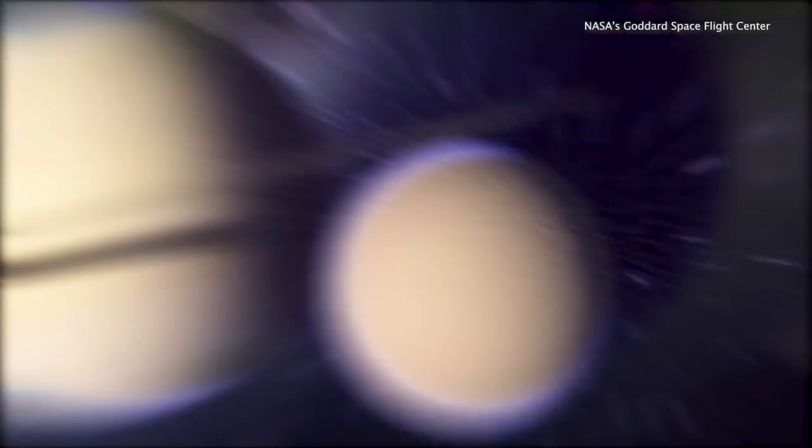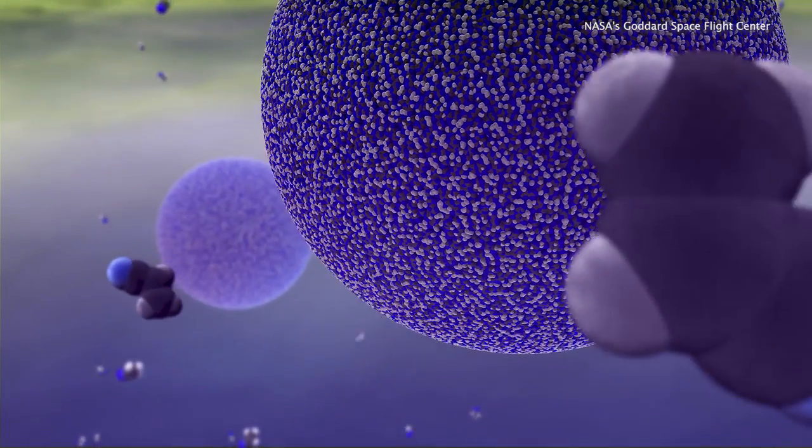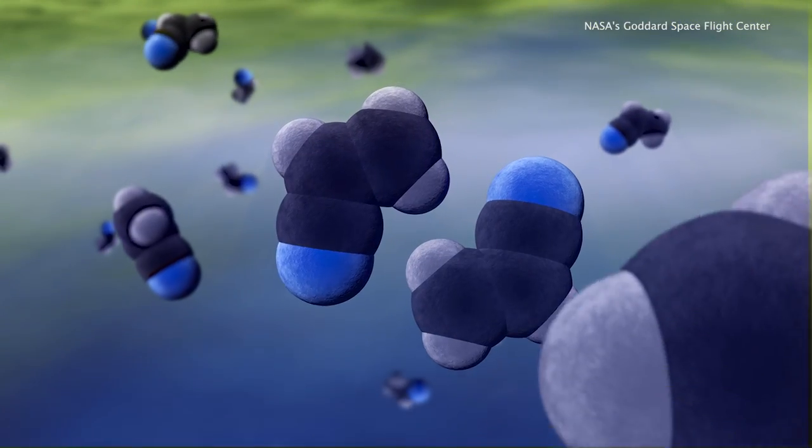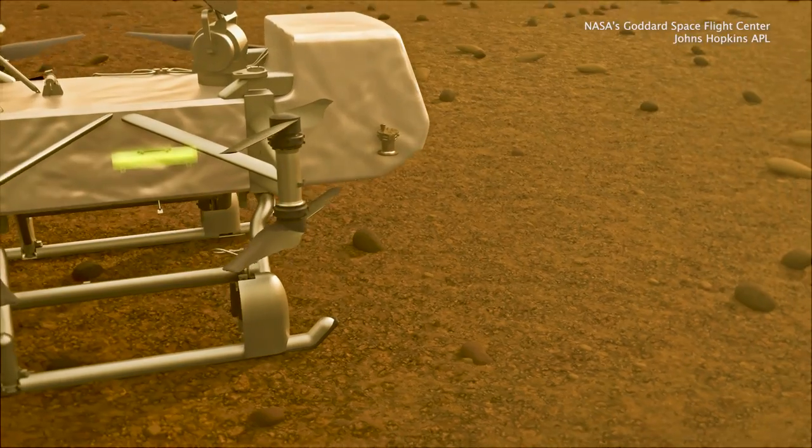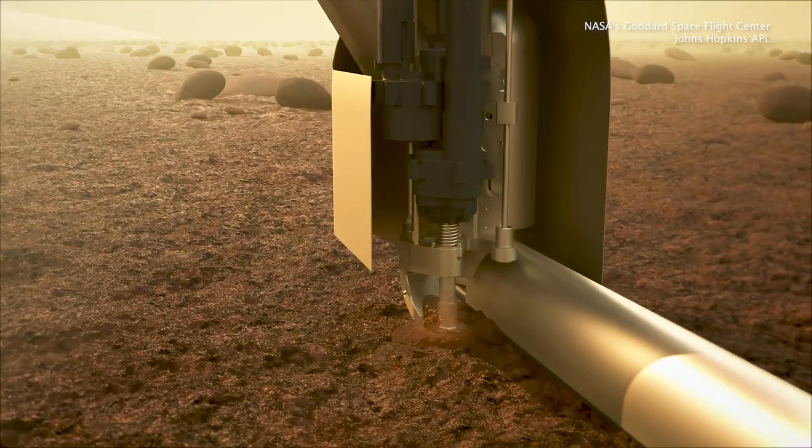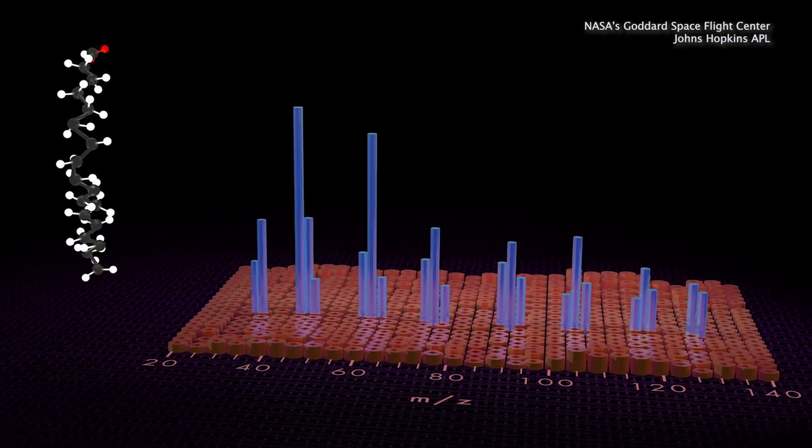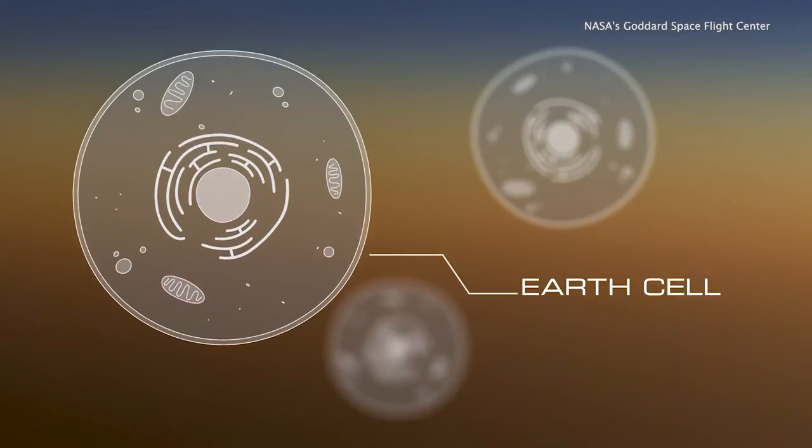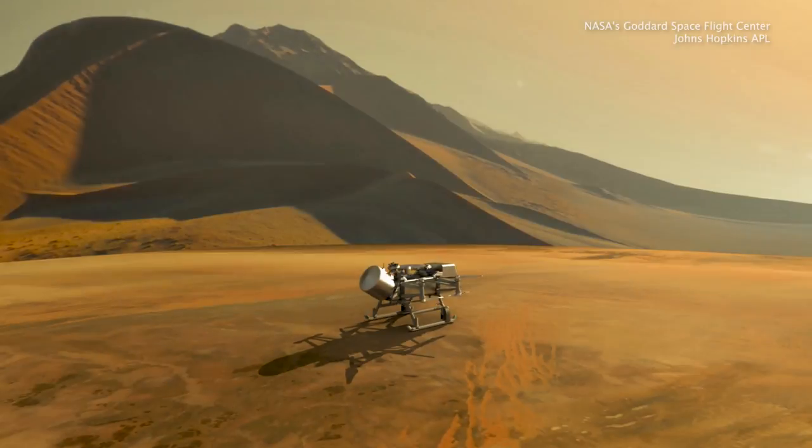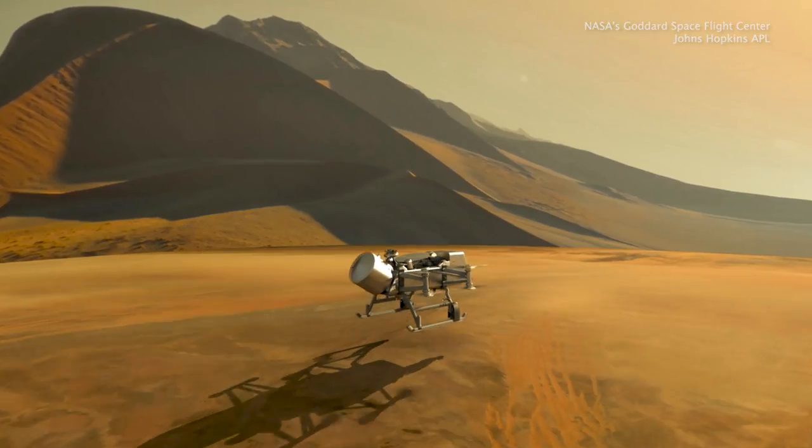Titan has absolutely the most complicated organic chemistry of any world in the solar system besides Earth. One of our big goals with Dragonfly is to actually figure out how far that chemistry has proceeded, and what that means for what happened during early Earth's history, and also for the potential of actual life on Titan today.